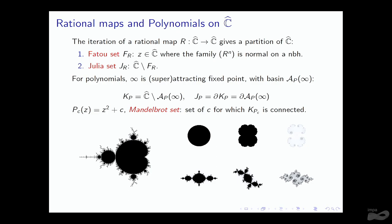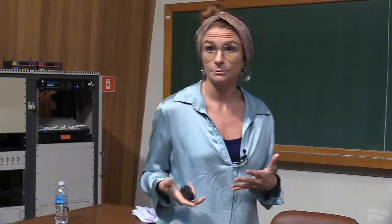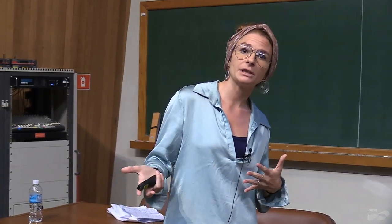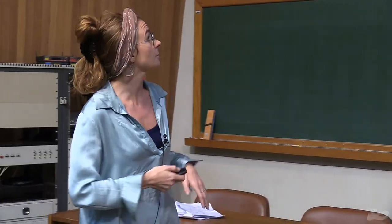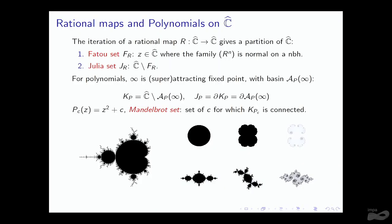We can define the connectedness locus of the family as the set of parameters for which the Filled Julia set is connected. In the case of the quadratic family, the connectedness locus is called the Mandelbrot set. Zero is a parameter for which the Filled Julia set is connected — it lives inside here. One quarter lives inside here at the cusp. And one quarter plus epsilon lives outside.